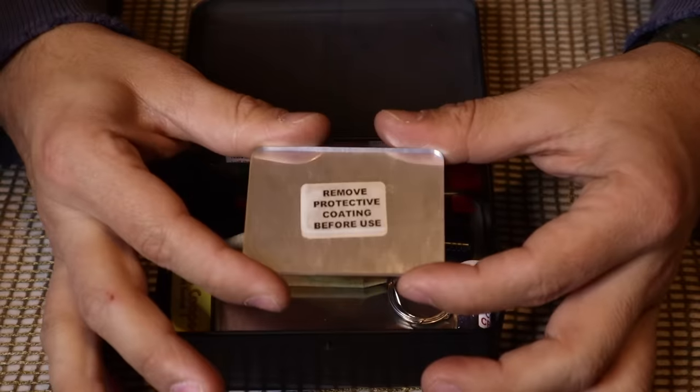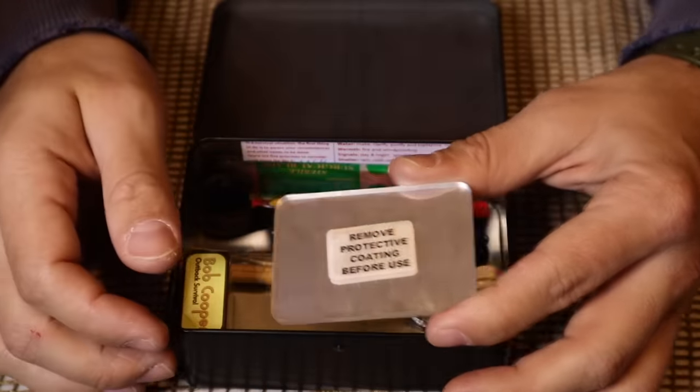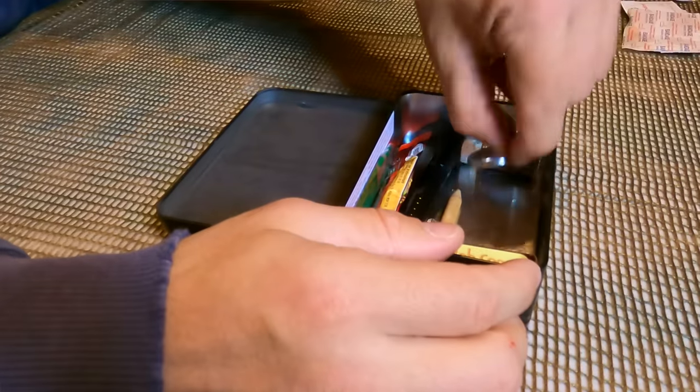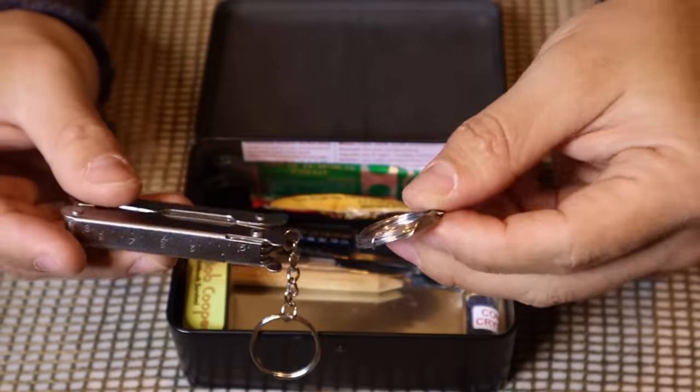We've got a handy dandy signaling mirror. Always good. Highly effective. Signaling mirrors, good to have in our kit. Got some good wire right there. We can use our multi-tool to break that wire and create snares to go after game and try to get some food.